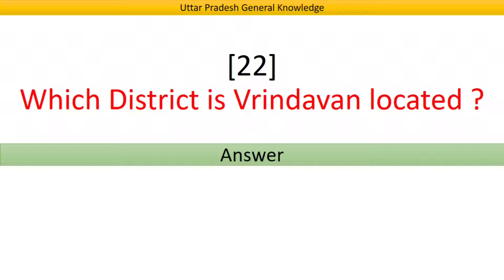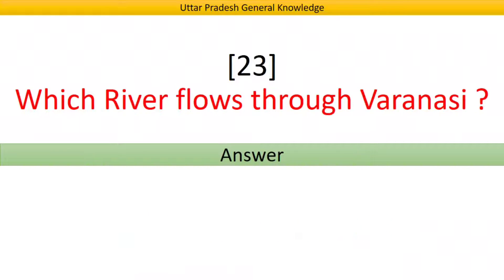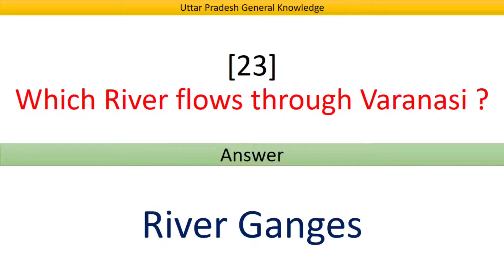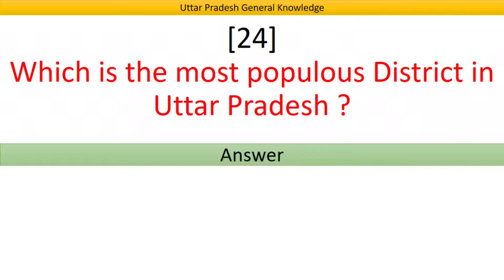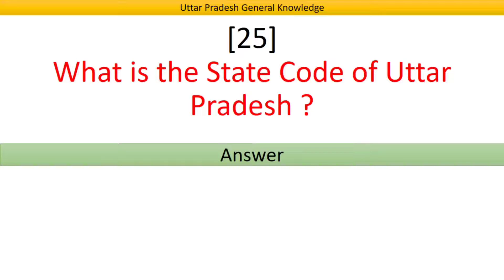Which district is Vrindavan located in? Answer: Mathura district. Which river flows through Varanasi? Answer: River Ganges. What is the state code of Uttar Pradesh? Answer: UP.